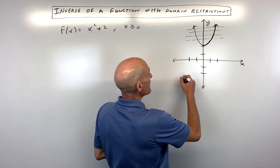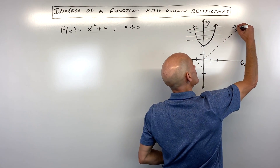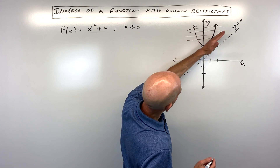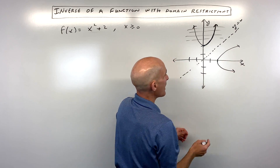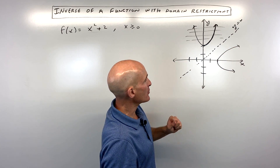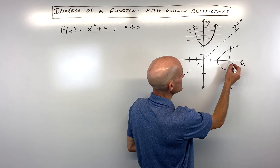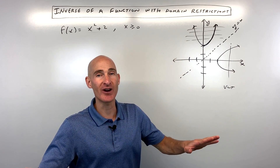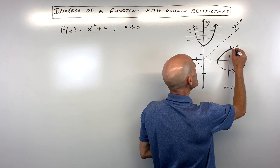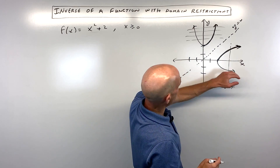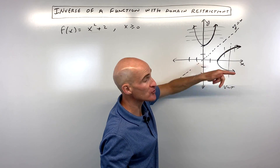Another way to look at this: when you find the inverse of a function, graphically it's a reflection over the line y equals x. So if we were to reflect or fold the graph over this line, what it would look like is a parabola on its side. You can see this actually fails the vertical line test — for this input, there's more than one output, so that's not a function. But if we're just using this right branch and reflect it over, we're looking at just the top part of the graph, and this does pass the vertical line test — it's only crossing at most once, so for every input there's only one output.